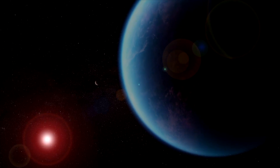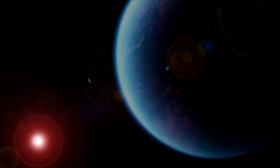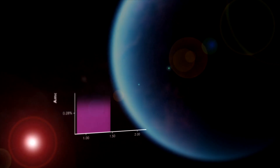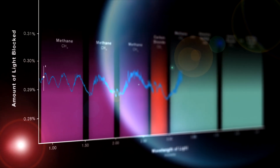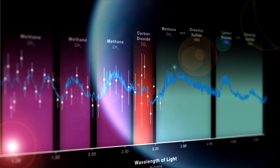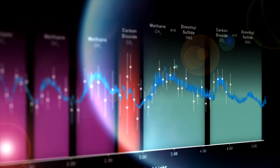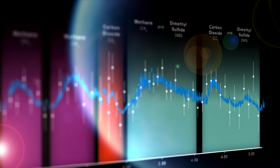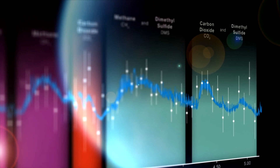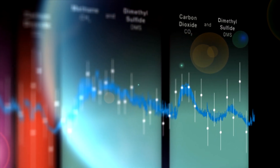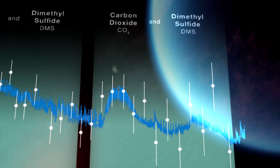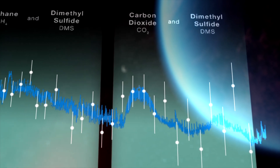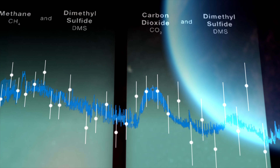And then we looked at it. For the first time, we saw a spectrum with multiple peaks, multiple molecular features. Very quickly, we figured out that we were seeing carbon-based molecules in the atmosphere of a habitable zone planet. And on top of that, we were seeing a faint signal, potentially, of a molecule called dimethyl sulfide.